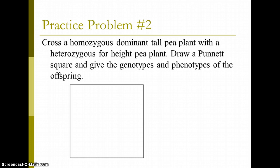Okay, so hopefully you paused and tried the problem. I'm going to go ahead and walk through it. So, cross a homozygous dominant tall pea plant. Because I know that being tall is dominant, I'm going to use the letter T's. So, I know that one parent is big T, big T, homozygous tall, with a heterozygous tall pea plant. So, that's going to be big T, little t.